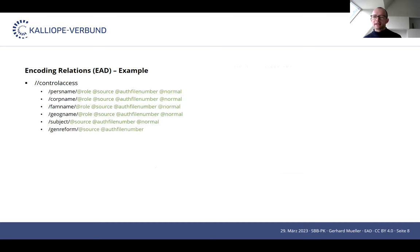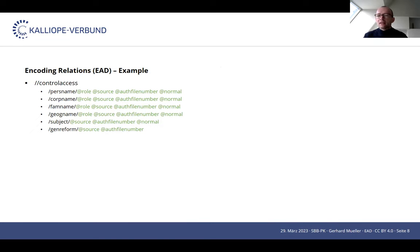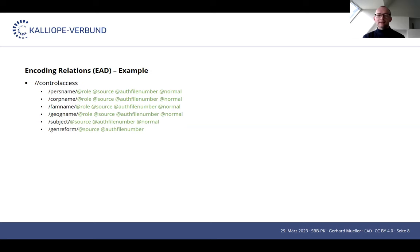Third example: control access. Any entities identified within a description of archival materials are encoded with the wrapper element control access and its child elements, depending on the entity type — persons, corporate bodies, families, places, topics, documentary format. The approach of encoding data is very similar to the first two wrapper elements, repository and origination. Child element content encodes the display names of referenced entities. The attribute role encodes relators describing the nature of the relation. The attribute source encodes the abbreviation of the authority file. The attribute authfilenumber encodes the control number. The attribute normal encodes the authority name form.